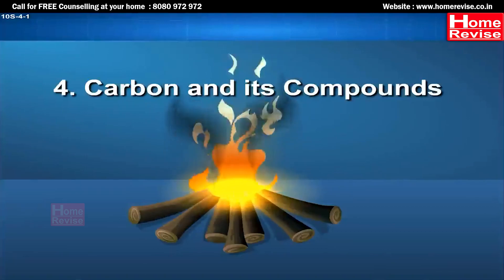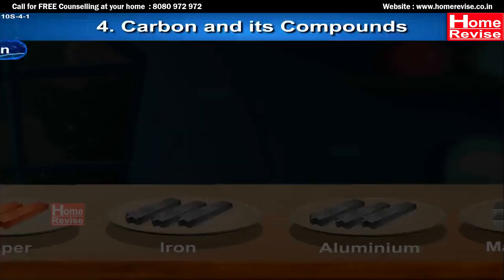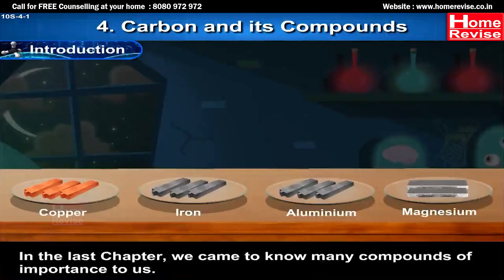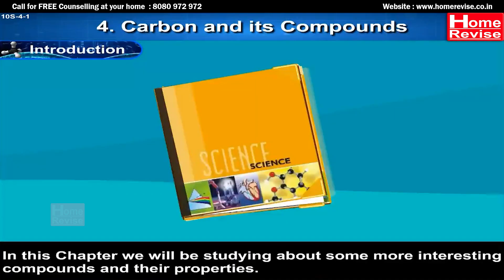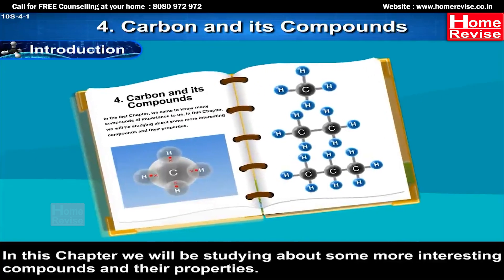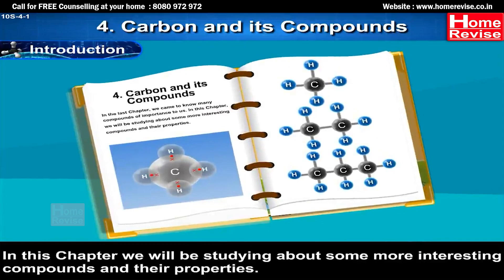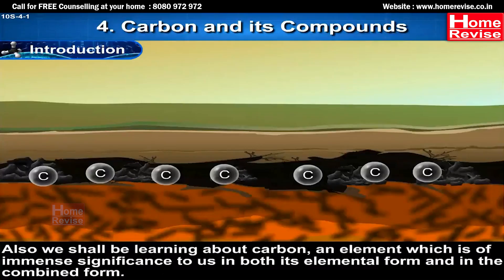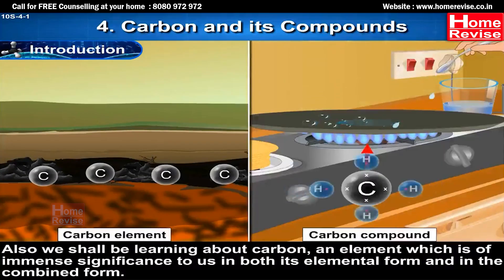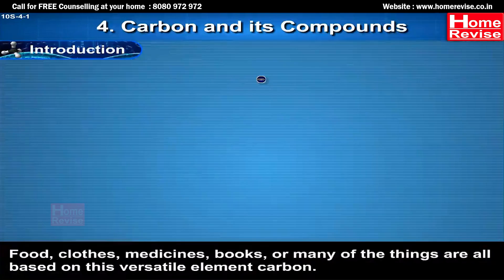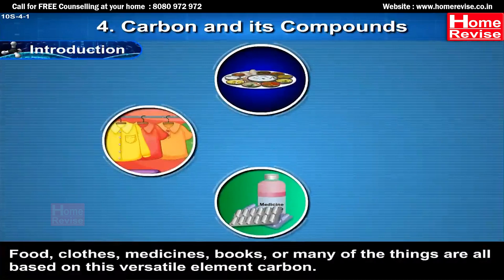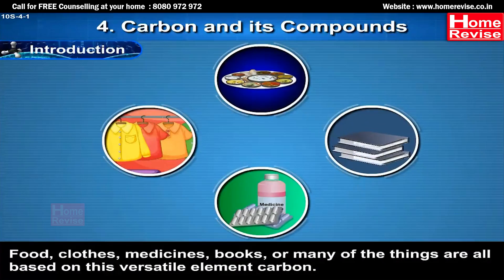Chapter 4: Carbon and its Compounds. Introduction: In the last chapter, we came to know many compounds of importance to us. In this chapter, we will be studying about some more interesting compounds and their properties. We shall be learning about carbon, an element which is of immense significance to us in both its elemental form and in the combined form. Food, clothes, medicines, books — many of the things around us are all based on this versatile element, carbon.